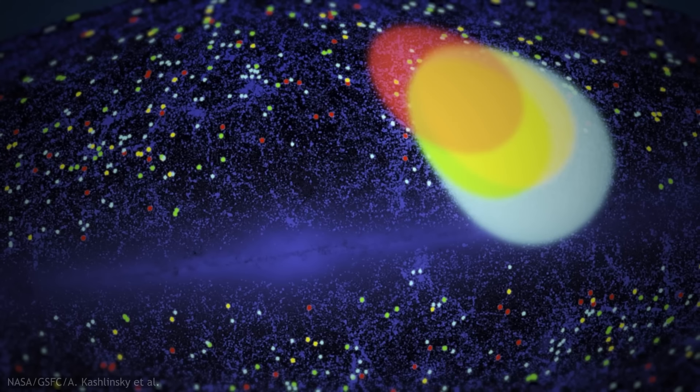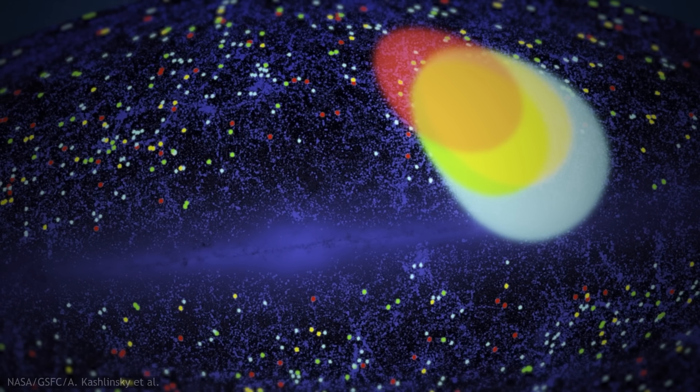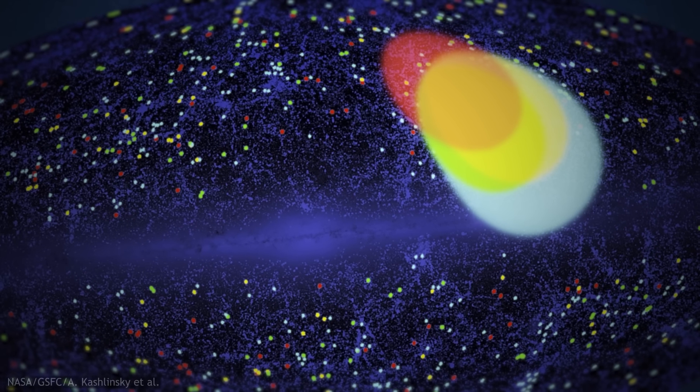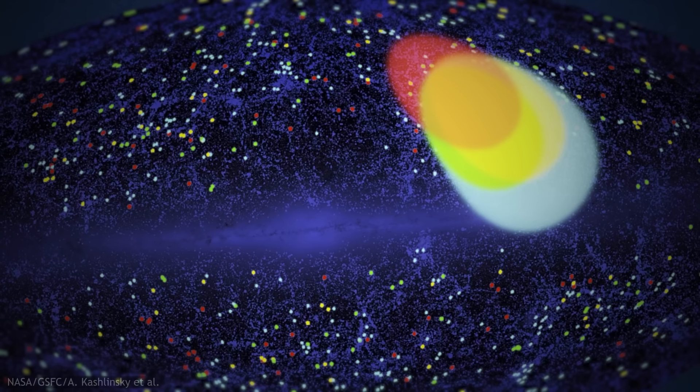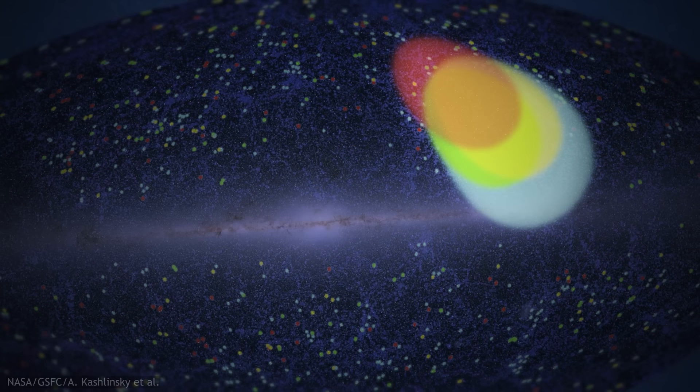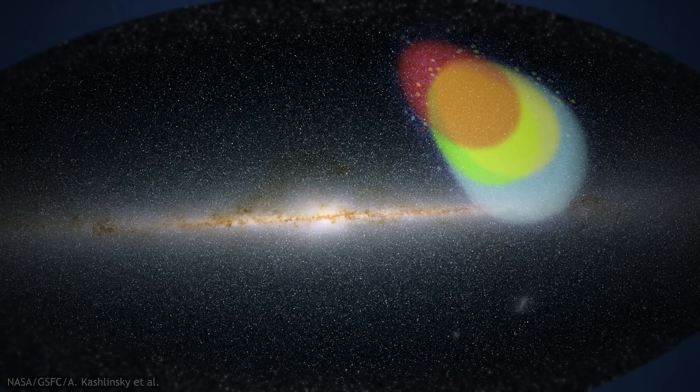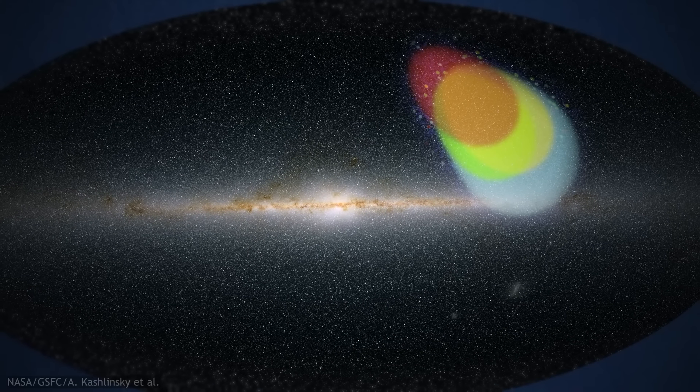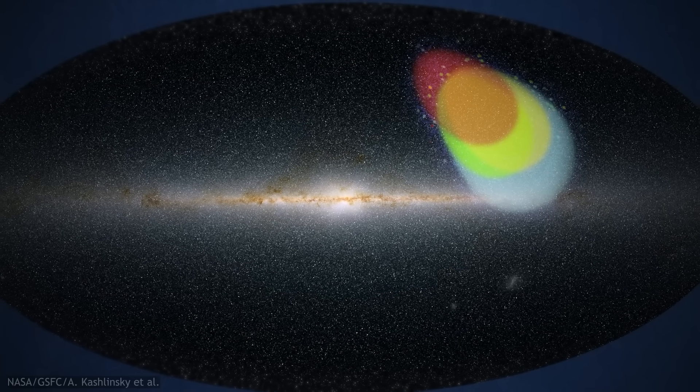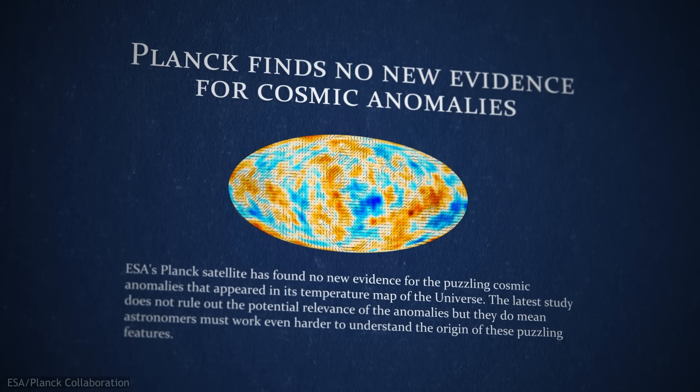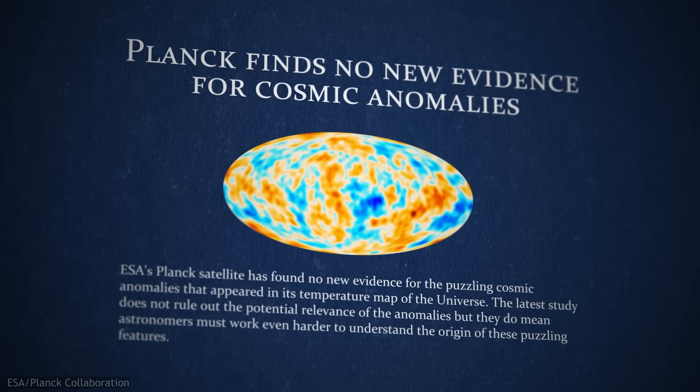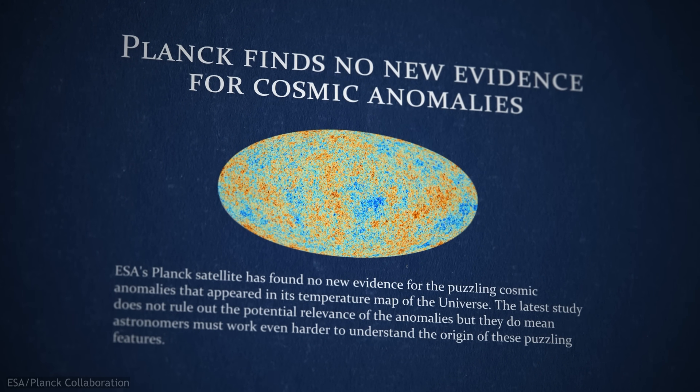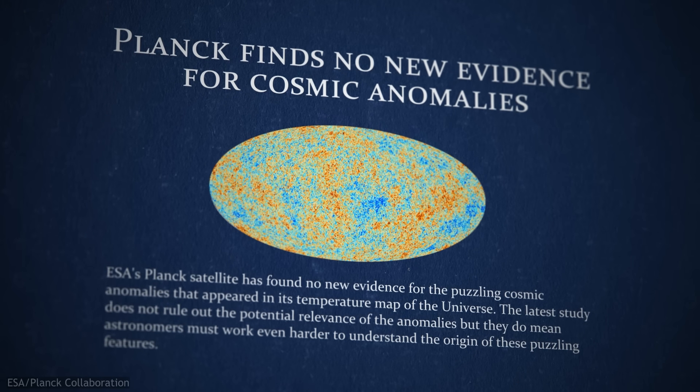And the intriguing puzzle with this dark flow is that the differences in density in the universe aren't large enough to explain the velocity. There simply isn't enough material collected together in any one patch of the universe to explain such large scale coherent motion. Although in 2013, scientists with ESA's Planck satellite found no evidence for dark flow. Debate continues.